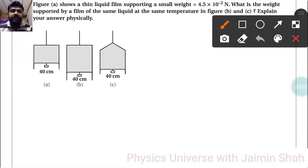Figure A shows a thin liquid film supporting a small weight, W = 4.5 × 10^-2 Newton. What is the weight supported by a film of the same liquid at the same temperature in figures B and C?